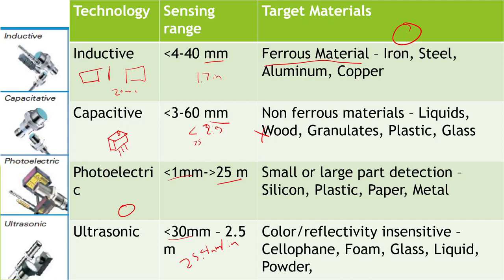The nice thing about capacitive sensing is you can actually detect the difference between an empty bottle and a full bottle. An empty plastic bottle doesn't have as much capacitance, so it wouldn't trigger the sensor where a full bottle would. You can use it for level sensing — if the liquid is below the sensor it doesn't trip, but if it's at the sensor level it will. They can use this to make sure every bottle coming off the assembly line has enough water.